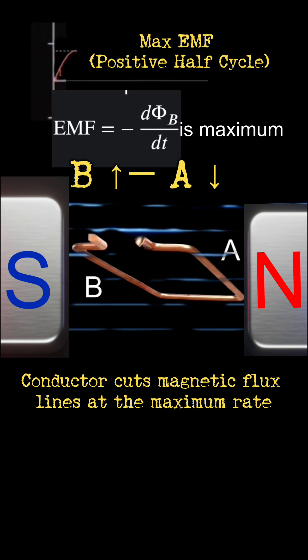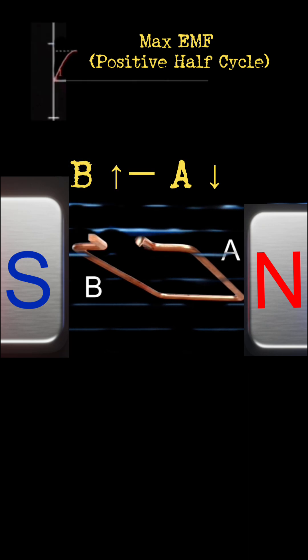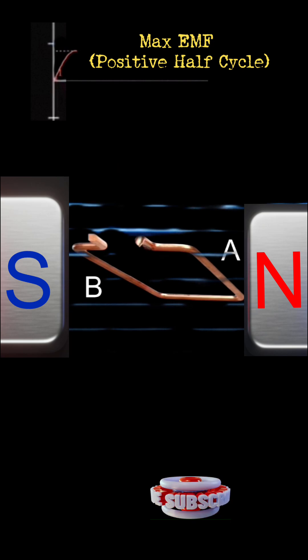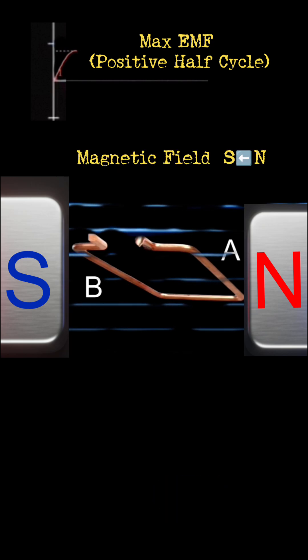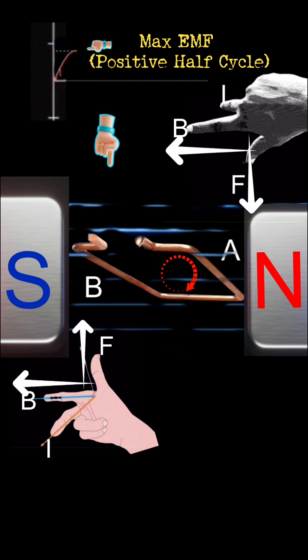At right angles, the conductors produce the greatest rate of change of flux. As side A moves downwards and B moves upwards, each side cuts the magnetic field lines. At this position, the rate of change of flux is maximum, so the induced EMF is also maximum.